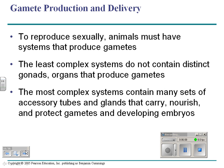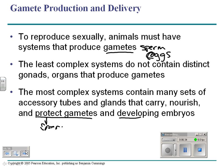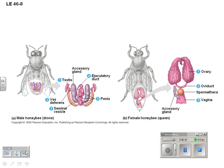Most systems of sexual reproduction have systems that produce gametes — sperm and egg generally. We talked about this in plants: plants have systems that produce pollen and ovules. Most complex systems have tubes and glands to nourish and protect gametes and developing embryos — usually in the male to nourish and protect sperm, and in the female to nourish and protect the egg and the baby. Using honeybees as an example: males have a very complex reproductive system with sperm, and females have a very complex system with lots of tubes and glands.